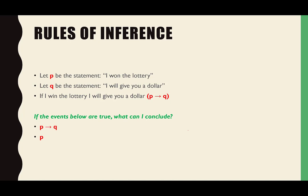If we know that P implies Q is true, and we know that P is true, then what can we conclude for sure? Q. If I have a scenario of P therefore Q, and I know the hypothesis is true, and the whole statement is true, then I can conclude whatever Q is. Mathematically, I can conclude that Q is also true, which can be very useful in a proof.